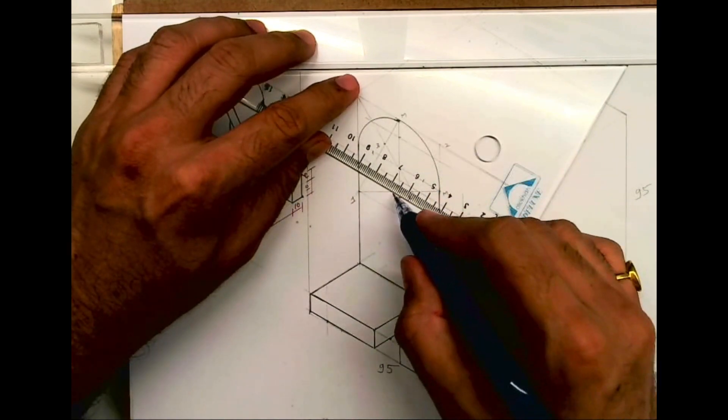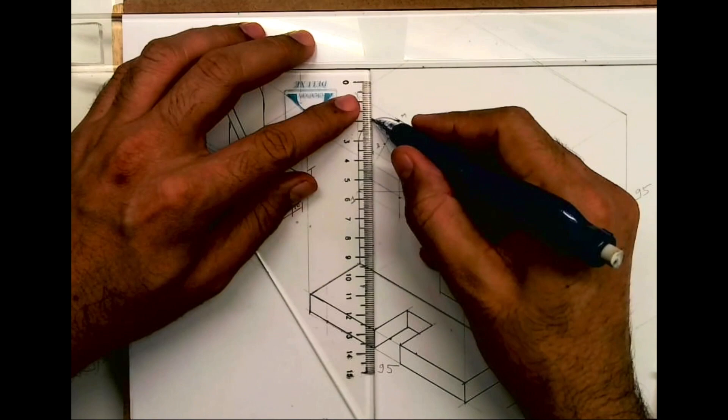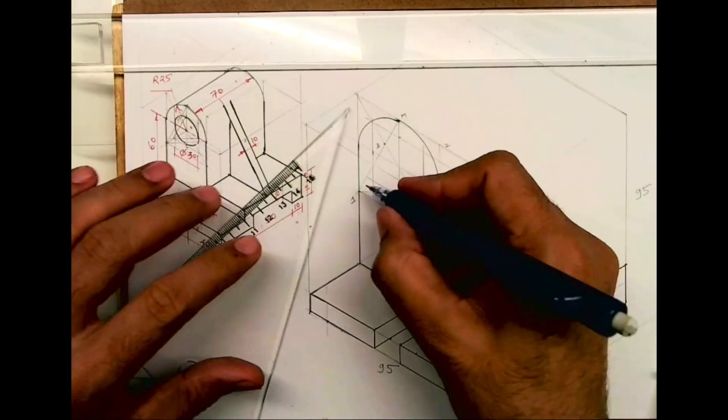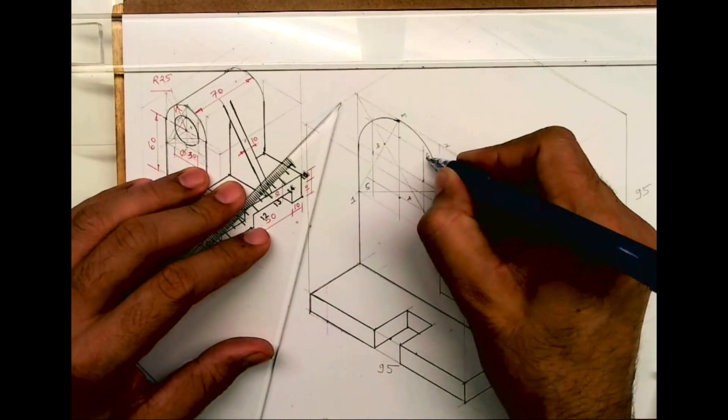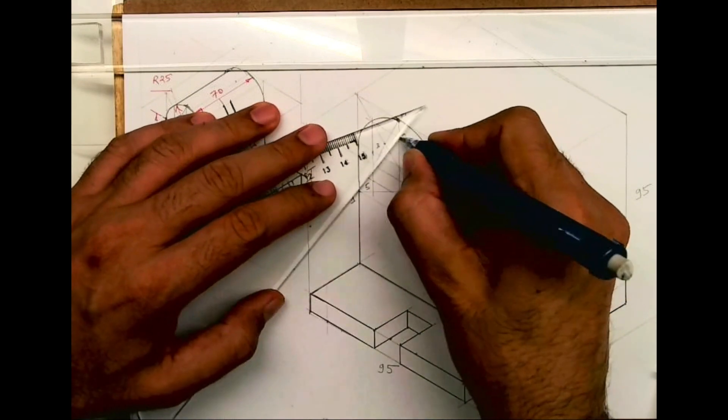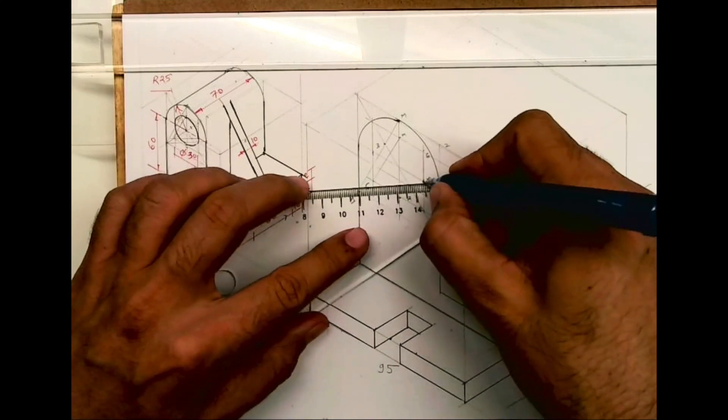Then follow the same method to draw inner circle. I'll write this point as five, this is six. This is again MM midpoint. Five to M we can join.